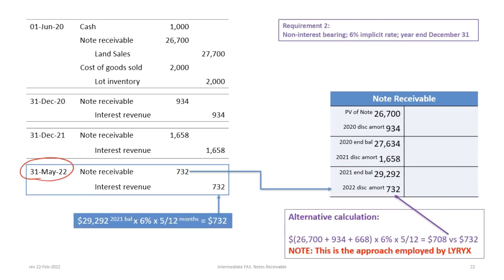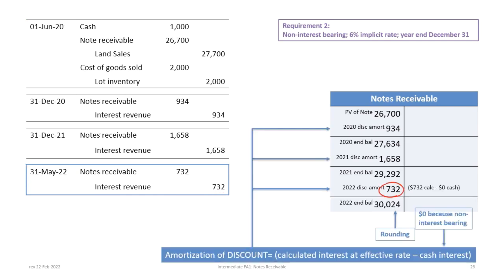On May 31st, 2022, just before settlement, we have to bring the balance up and record the last interest accrual. With a balance of $29,292 times 6% times 5 over 12 months — the other 5 of 12 (recall that in 2020 this was 7 out of 12 months) — that works out to $732. Adding $732 back into the notes receivable account gives an ending balance of $30,024, which is a rounding difference showing that our work is correct: we end up with a balance of approximately $30,000.